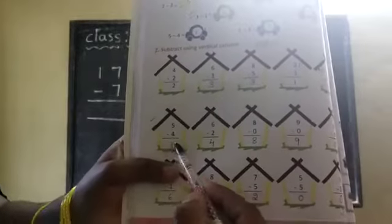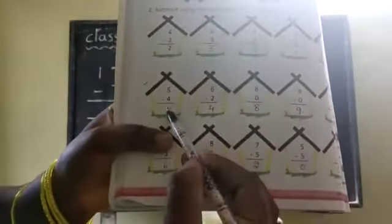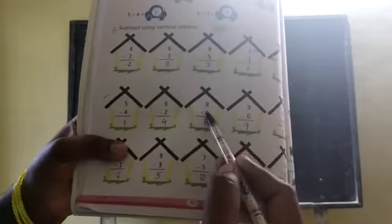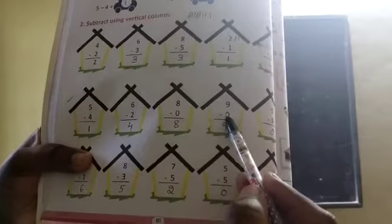Next, second roman loo 5 minus 4, 1. 6 minus 2, 4. 8 minus 0, 8. 9 minus 0, 9. 9 minus 9, 0.